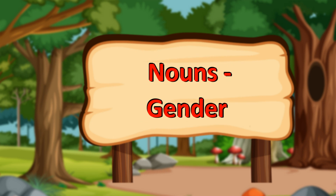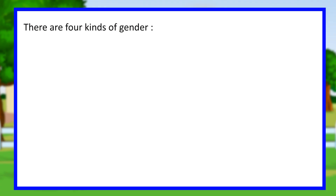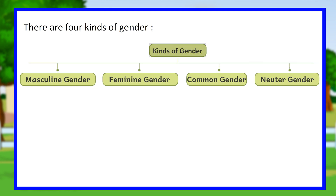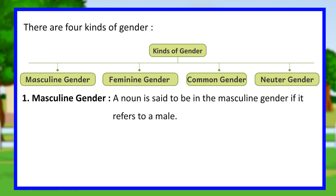Nouns gender. There are four kinds of gender: masculine gender, feminine gender, common gender, and neuter gender.